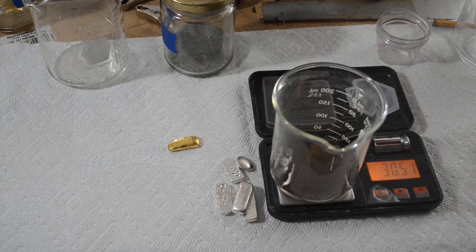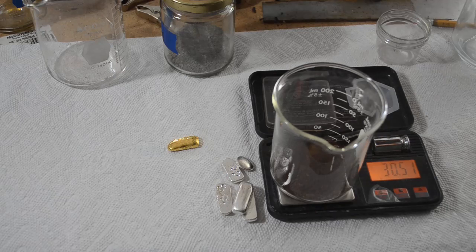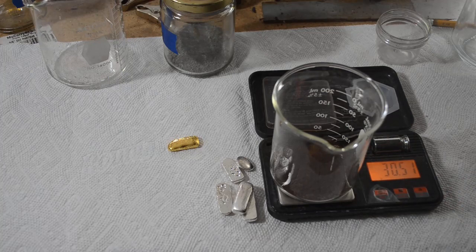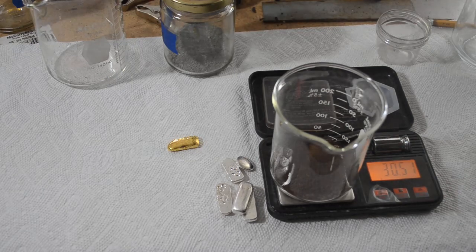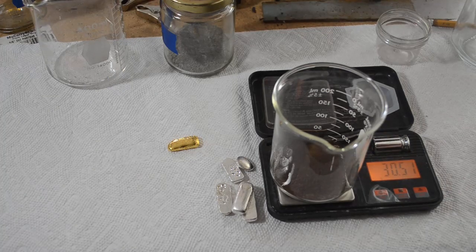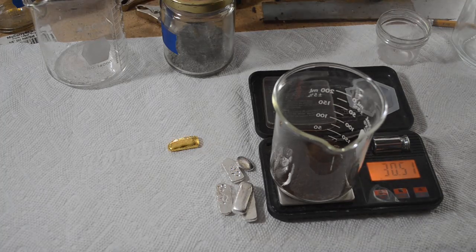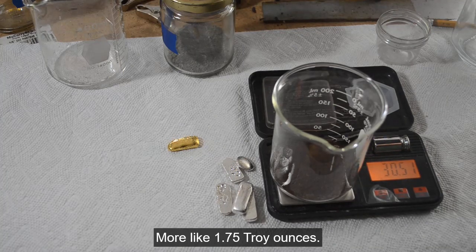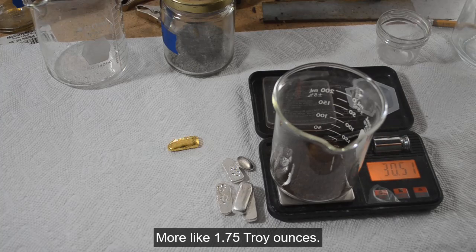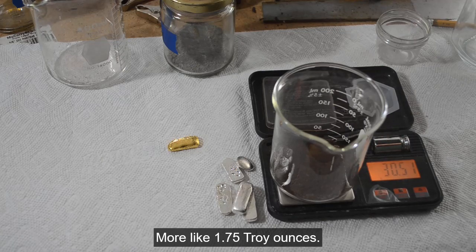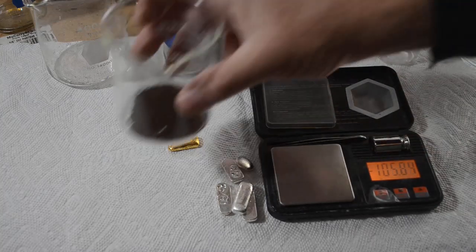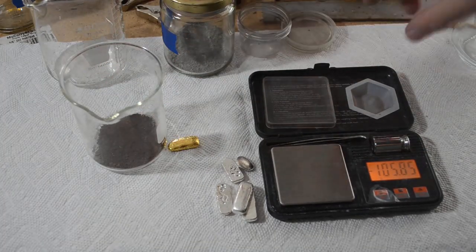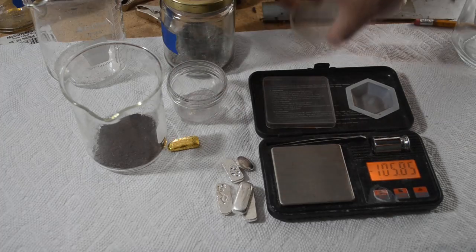So it needs to go through at least one, maybe two more refinings before I melt it down. We got 30.51 grams, we'll call it 30.5. So hey, 54.5 grams of gold. That's about an ounce and a half roughly. I guess that's pretty good for a year when I didn't have power for at least half of it. That's not too bad, I'll take that.